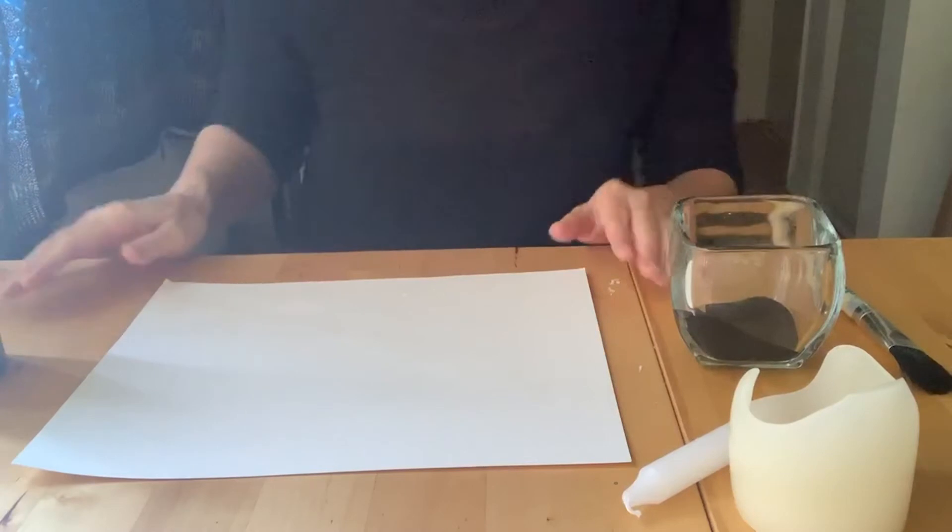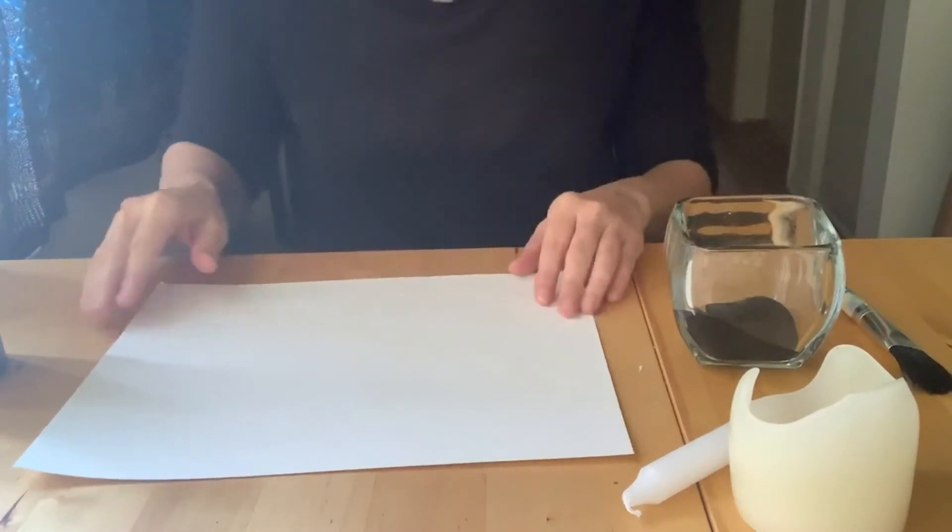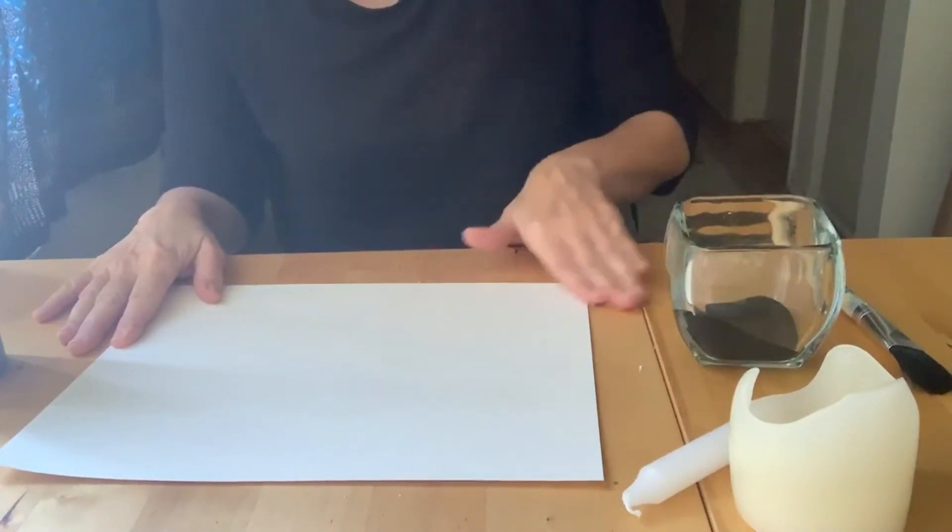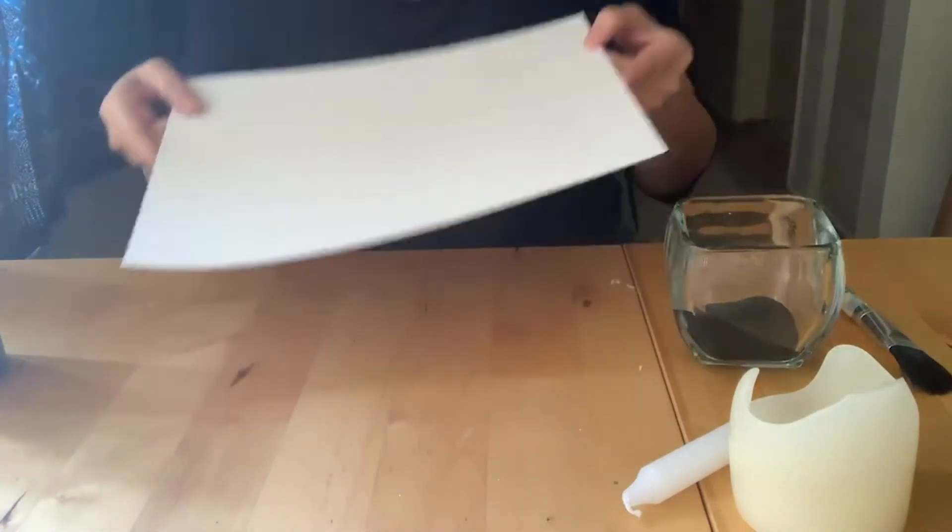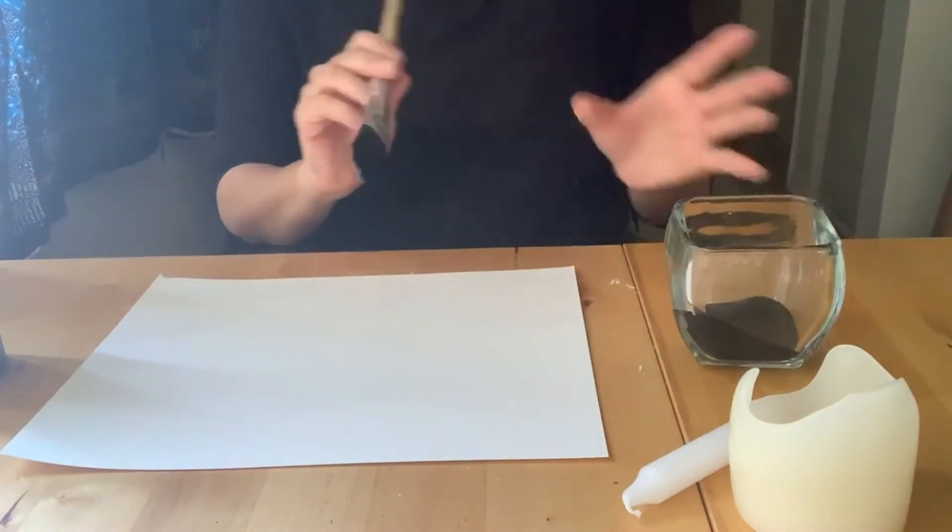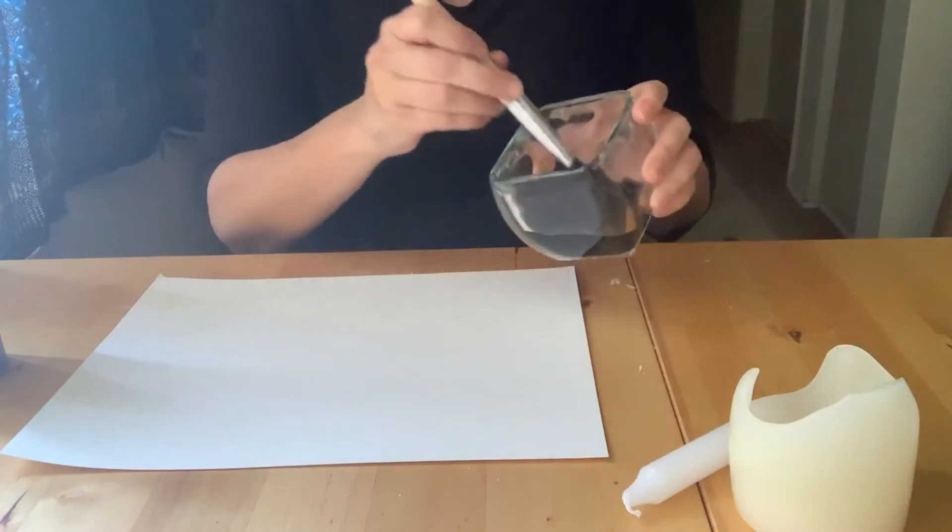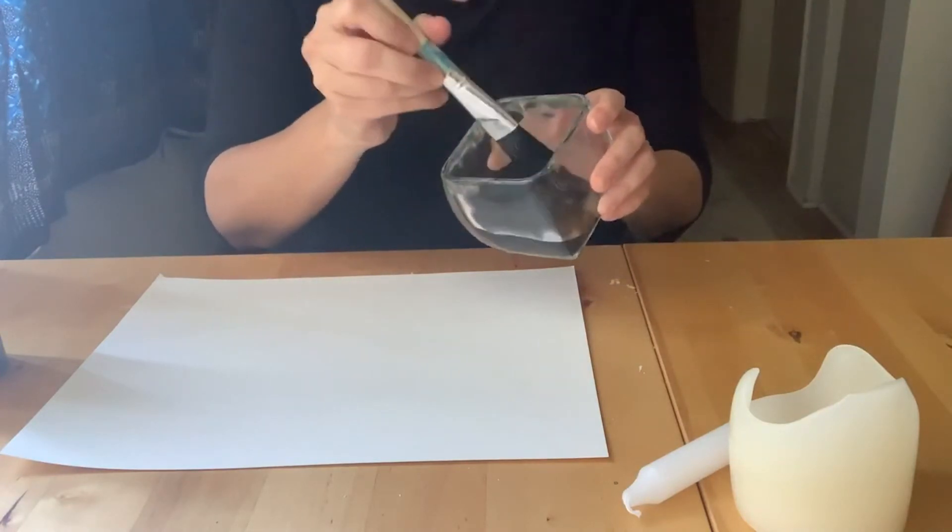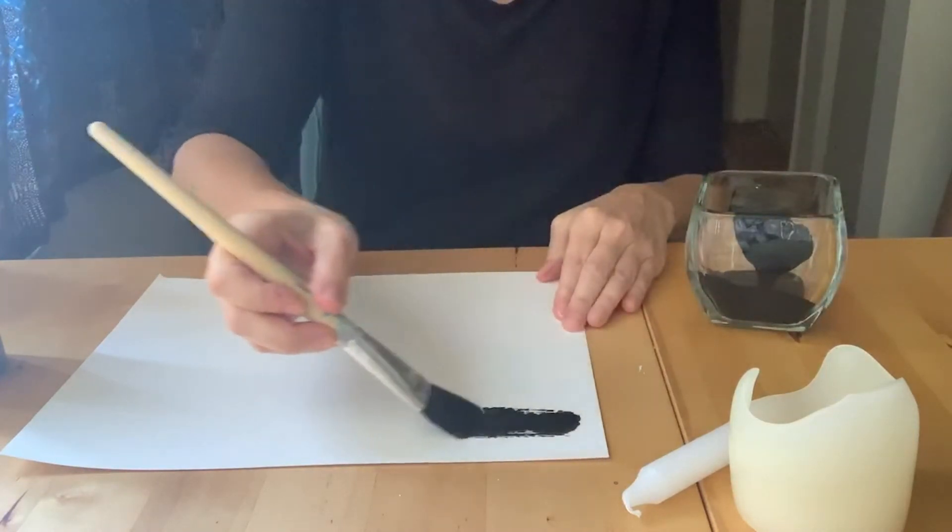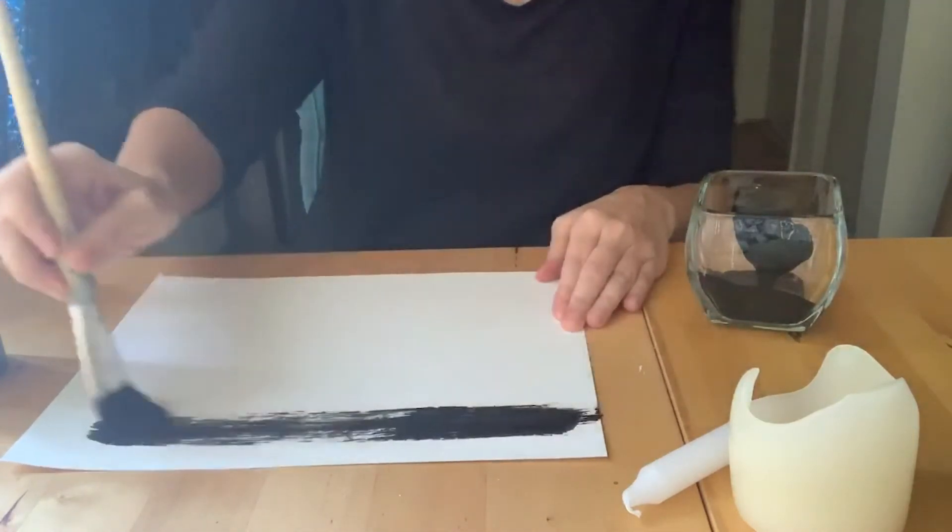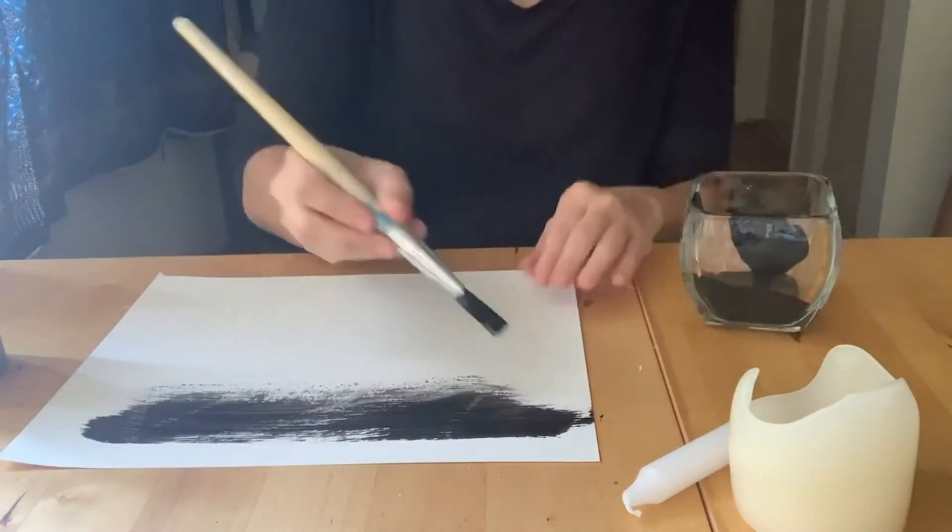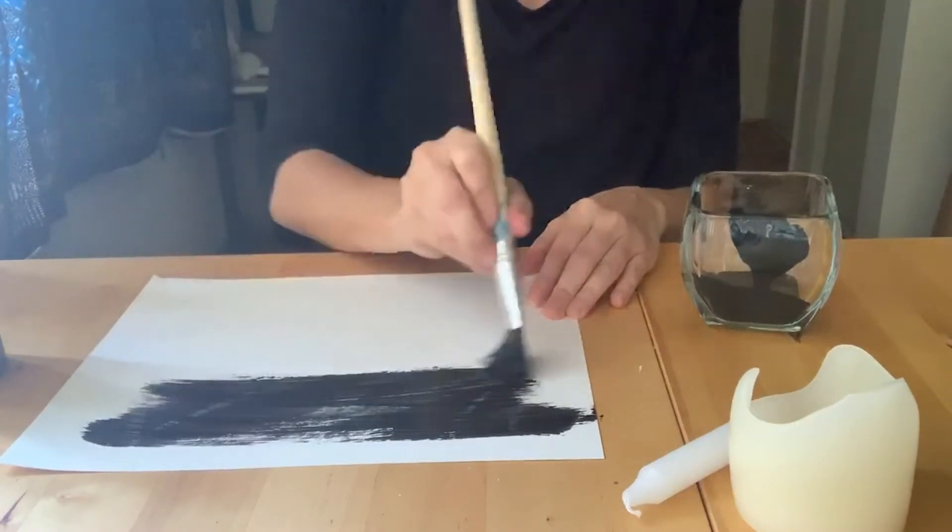And we're gonna wipe off all those pieces of wax that we saw, or you can use your mouth and blow it like that. Now we get to take our black paint and our brush and dip it in and just wipe the sides a little bit.